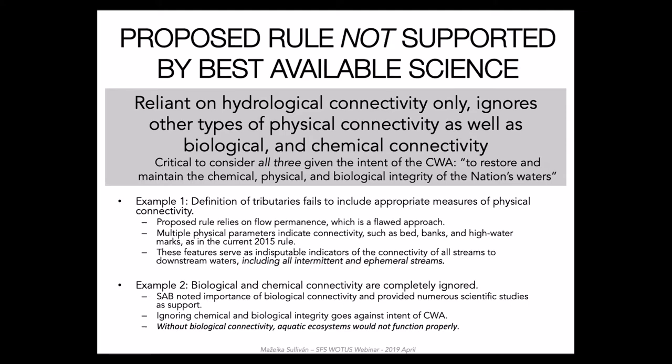This is the EPA graphic showing the intended jurisdiction of the proposed rule. Proposed jurisdictional waters are in bold, and it is notable that coastal waters are not addressed. Having discussed connectivity and the scope of the proposed rule, let's turn to the new rule and its lack of grounding in current science. The proposed rule relies almost solely on hydrologic connectivity in the form of flow permanence to determine jurisdiction, ignoring other types of physical connectivity as well as biological and chemical connectivity, which are critically important to downstream waters.